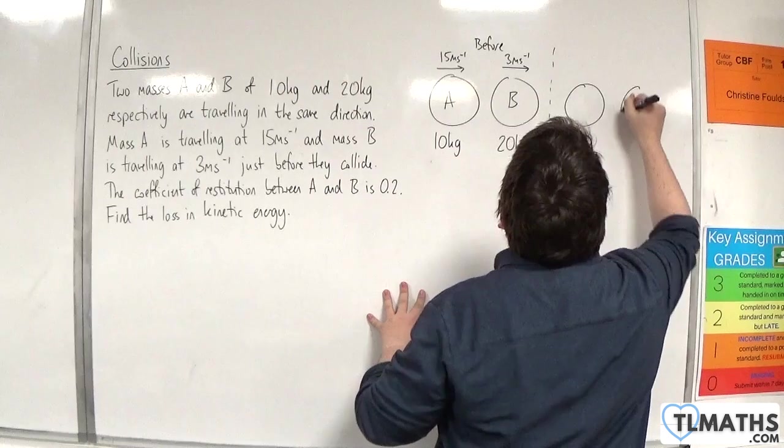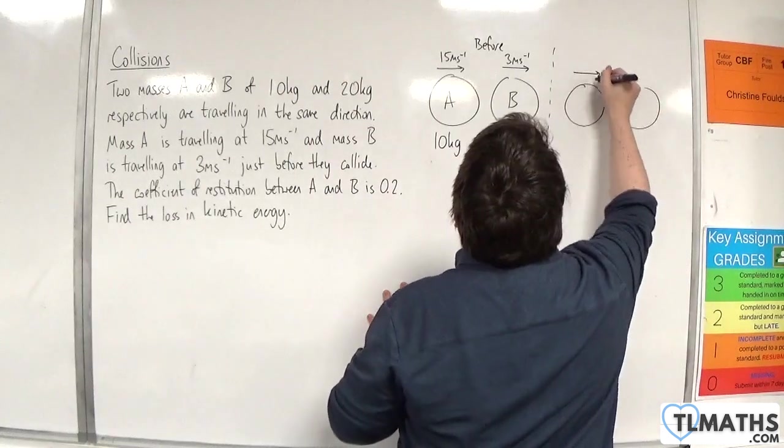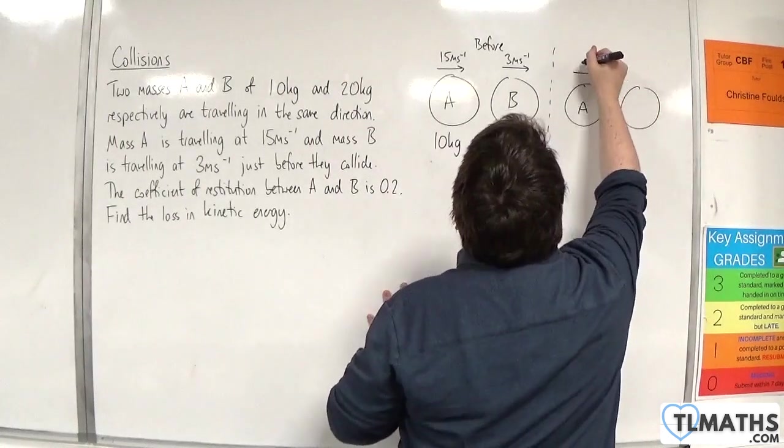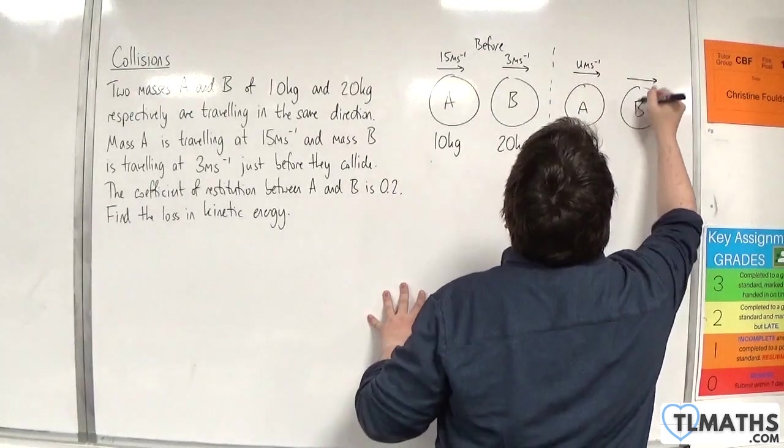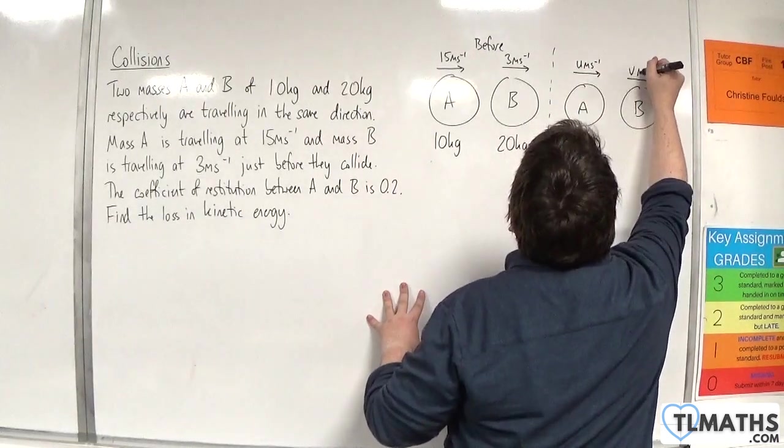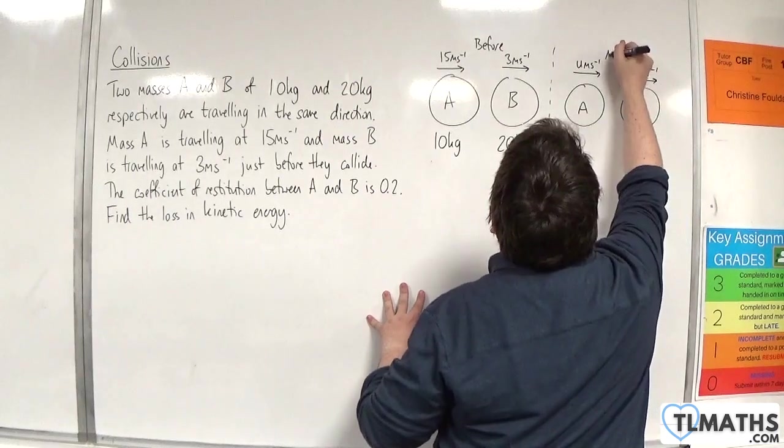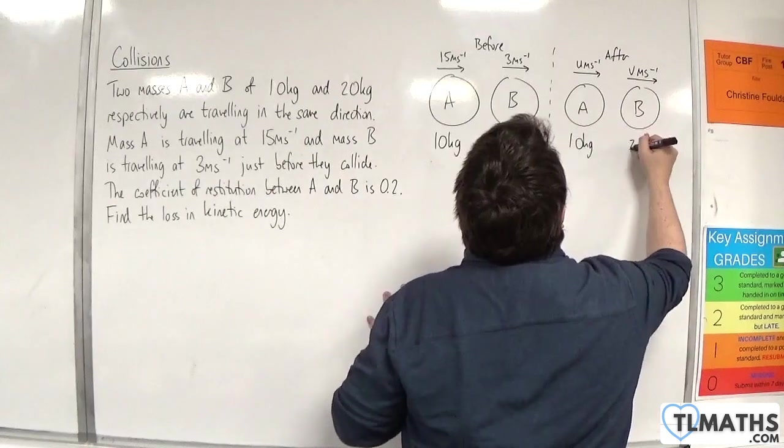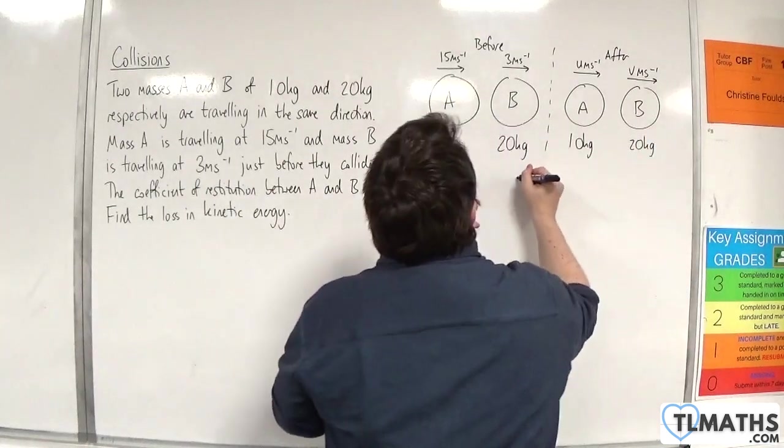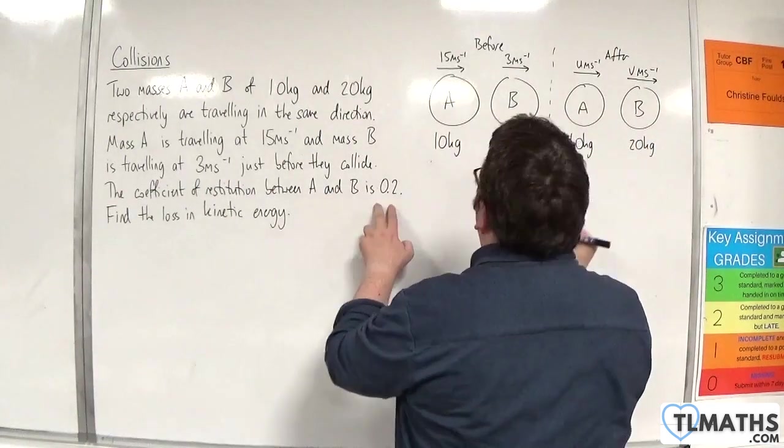Now afterwards, for A we don't know its velocity, so I'll write that as U meters per second. And the same for B, I don't know that velocity either, so I'll write it as V meters per second, that's after. Their masses, of course, won't have changed. And we know that the coefficient of restitution is 0.2.